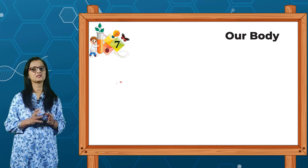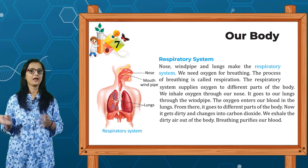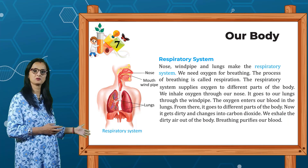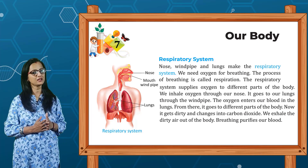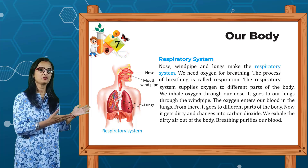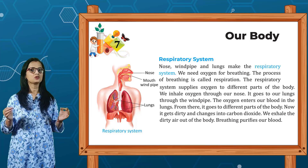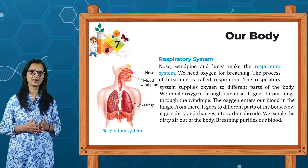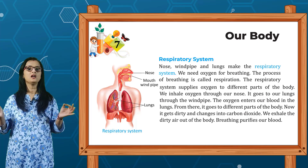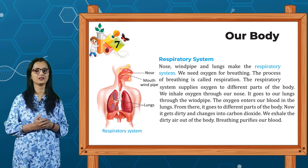Next is the respiratory system. Nose, windpipe and lungs make the respiratory system. We need oxygen for breathing. The process of breathing is called respiration. As shown in the picture, the respiratory system includes the nose, mouth, windpipe and lungs.